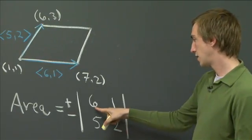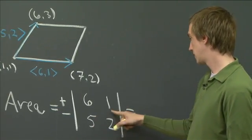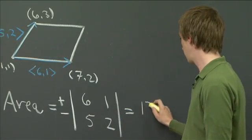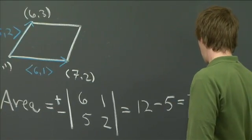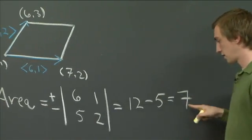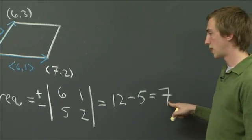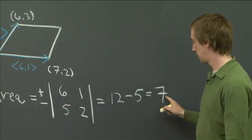So we find 6 times 2 minus 5. So we get 12 minus 5 is 7. Now we've got a positive number, and so this plus or minus we take to be positive.